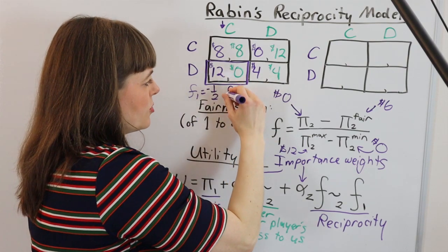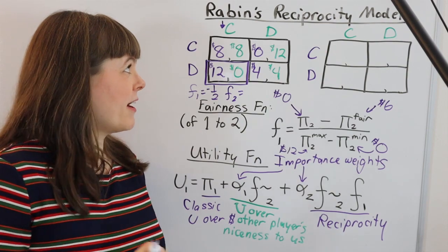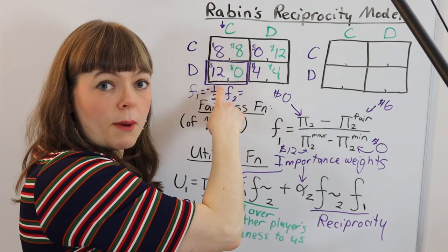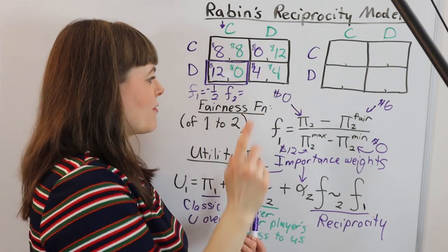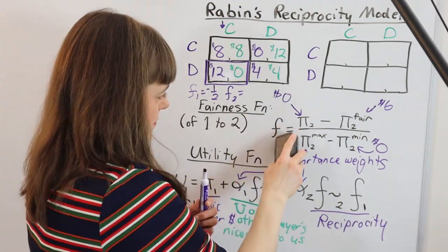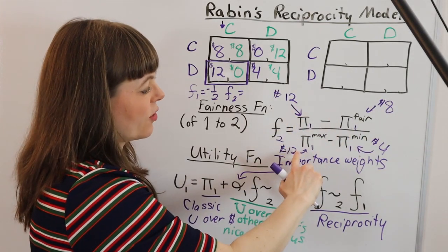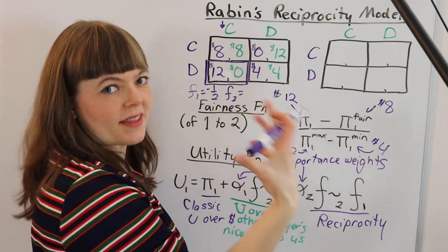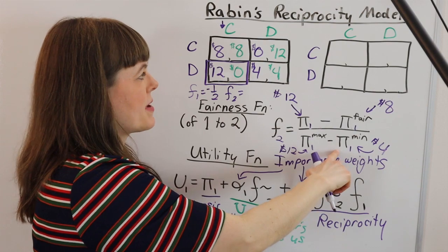In this box player two's fairness toward player one, well we're hoping it's going to be fair because player two was the one to cooperate in this box. So we're hoping it's going to turn out to be positive one half. And we find out that it is. Let me show you. So I get 12 minus 8 over 12 minus 4. That's positive one half. And the hard part here really is figuring out what's the max and what's the min.